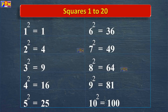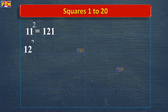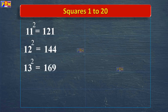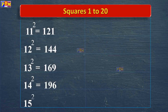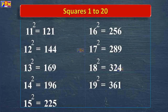11 square 121, 12 square 144, 13 square 169, 14 square 196, 15 square 225, 16 square 256, 17 square 289, 18 square 324, 19 square 361, 20 square 400.